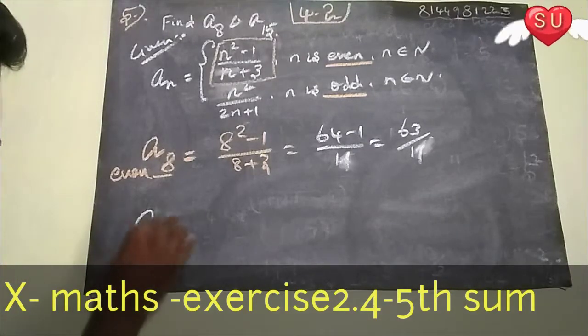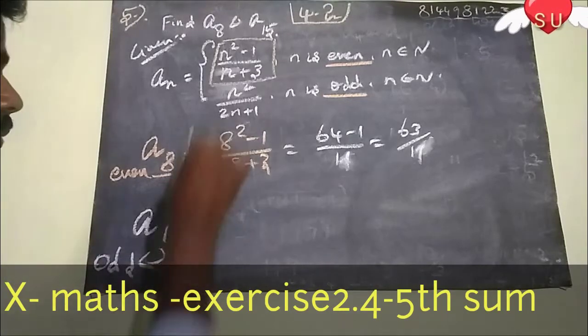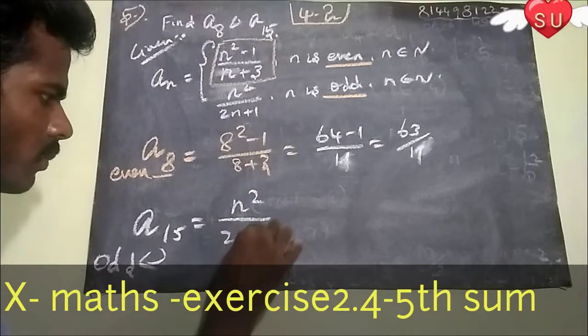Next, we will have A15. So, 15 is odd number. Odd number formula.